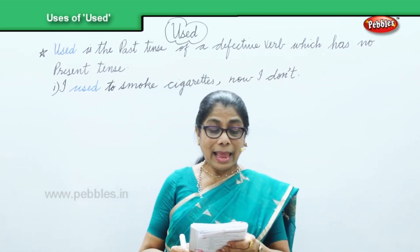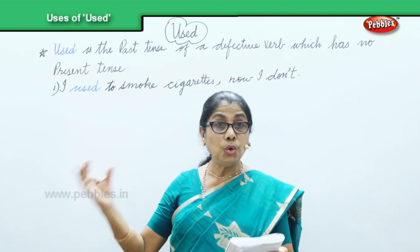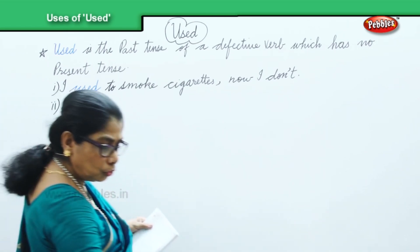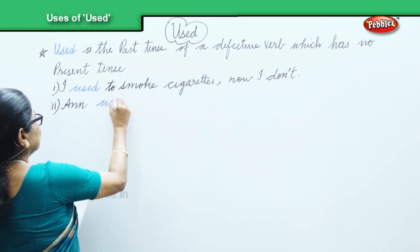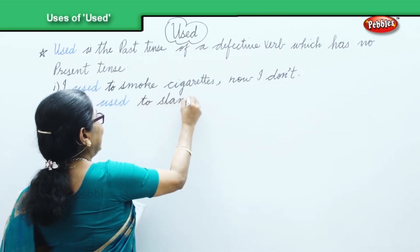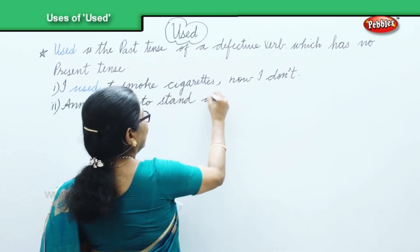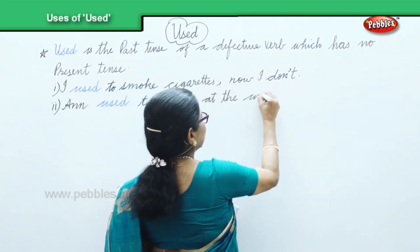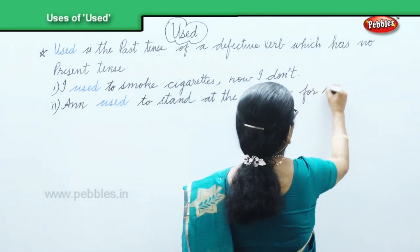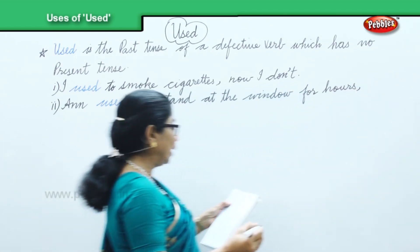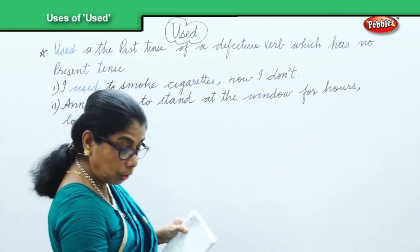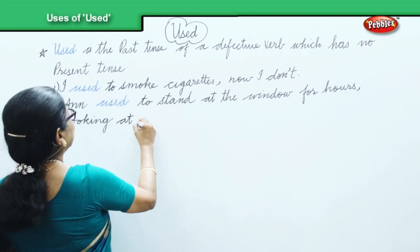The second sentence I have is: 'Ann used to stand at the window for hours, looking at the busy road.'